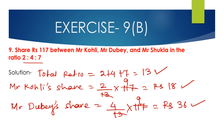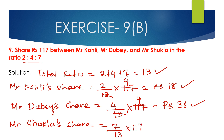Now, Mr. Sukla's share will be 7/13 multiplied by 117 rupees. Cancelling 13 and 117 — since 13 × 9 = 117 — we get 7 × 9 = 63 rupees. So Mr. Kohli's share is 18 rupees, Mr. Dubai's share is 36 rupees, and Mr. Sukla's share is 63 rupees.